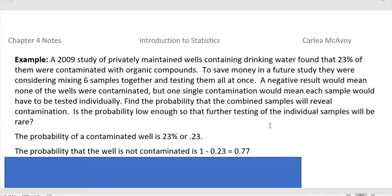To save money in a future study, they were considering mixing six samples together and testing them all at once. A negative result would mean none of the wells were contaminated. But one single contaminated sample would mean that each sample would have to be tested individually. Find the probability that the combined samples will reveal contamination. Is the probability low enough so that further testing of the individual samples will be rare?